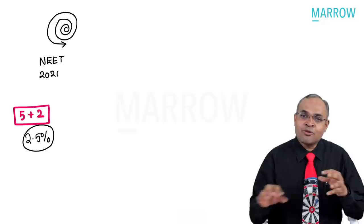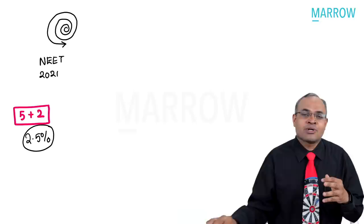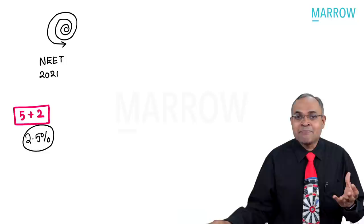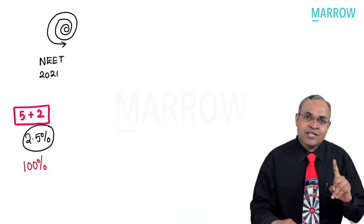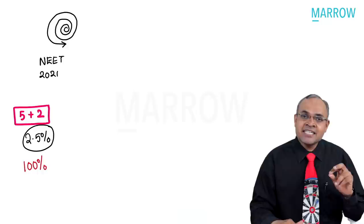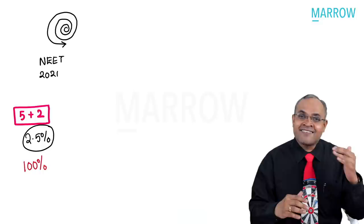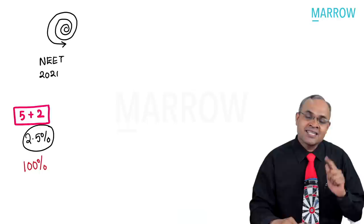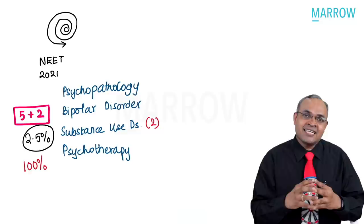Dear Marulinks, welcome to this session where we are going to recall the psychiatric questions from NEET 2021. We had about 5 plus 2 questions, approximately 2.5% of the total paper. Even though 2.5% looks small, it is important for two main reasons: psychiatry knowledge makes you a great clinician, and most psychiatry questions are relatively easier, so missing them means missing the bus—sometimes missing your dreams.